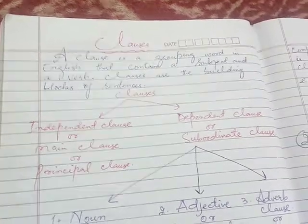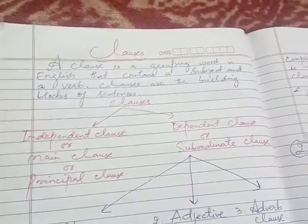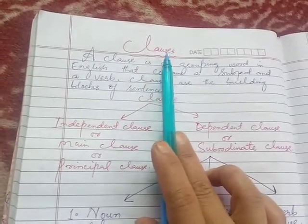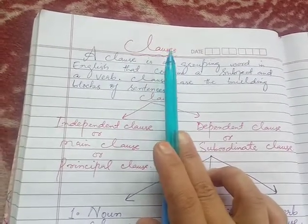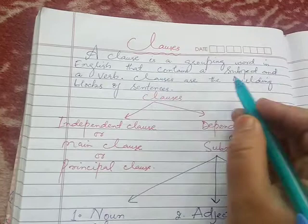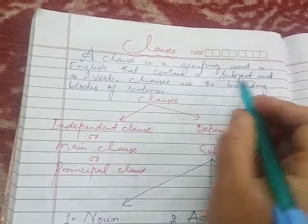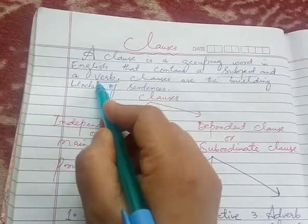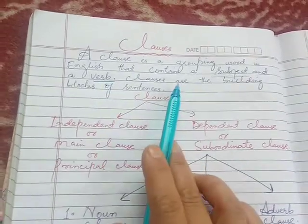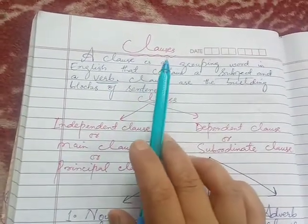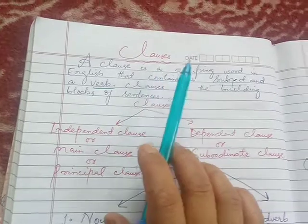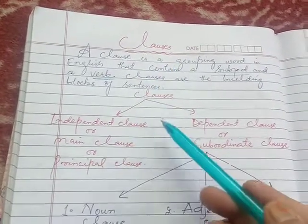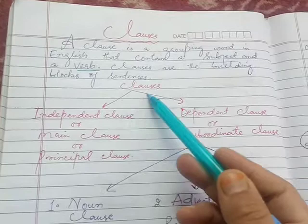Assalamu alaikum, my dear students. Today we will talk about clauses. A clause is a grouping word in English that contains a subject and a verb. This means that a subject and verb combination is a must for a clause. Clauses are also called the building blocks of sentences. These clauses are divided into two types.